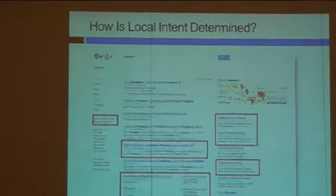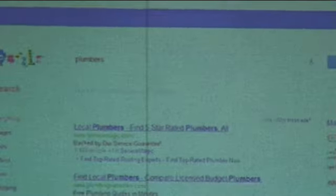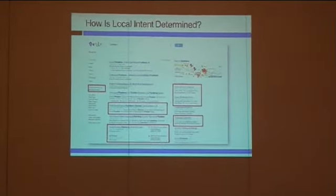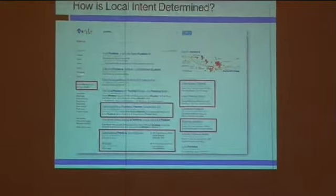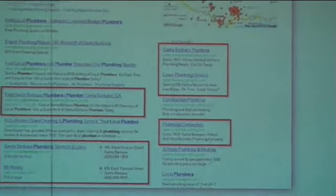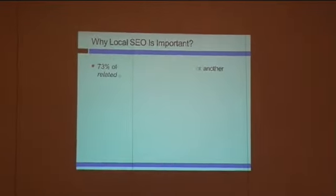All I did was type in plumbers. I didn't even put Santa Barbara, but because Google knows that my IP address is in Santa Barbara, it's pulling up Santa Barbara listings. There's your Google Places, the Google Ads (AdWords), and also the map over there.